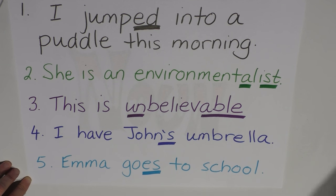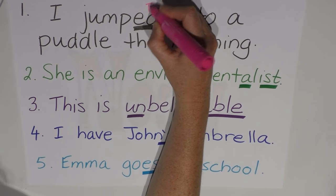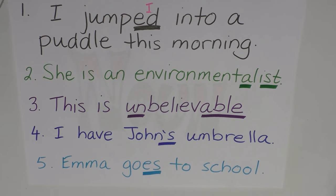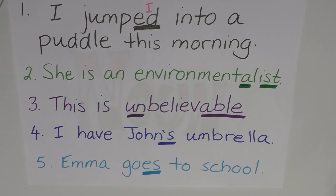Let's start with -ED on jumped. This is telling us that it happened in the past. This grammatical change is telling us it happened in the past. So this is an inflectional morphological change because it's telling us something grammatical about the sentence.